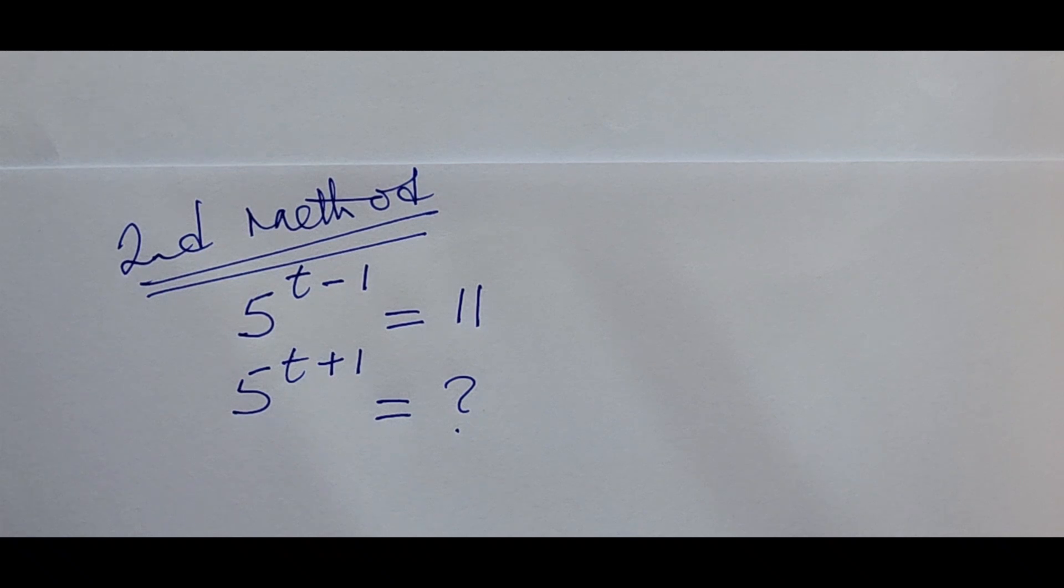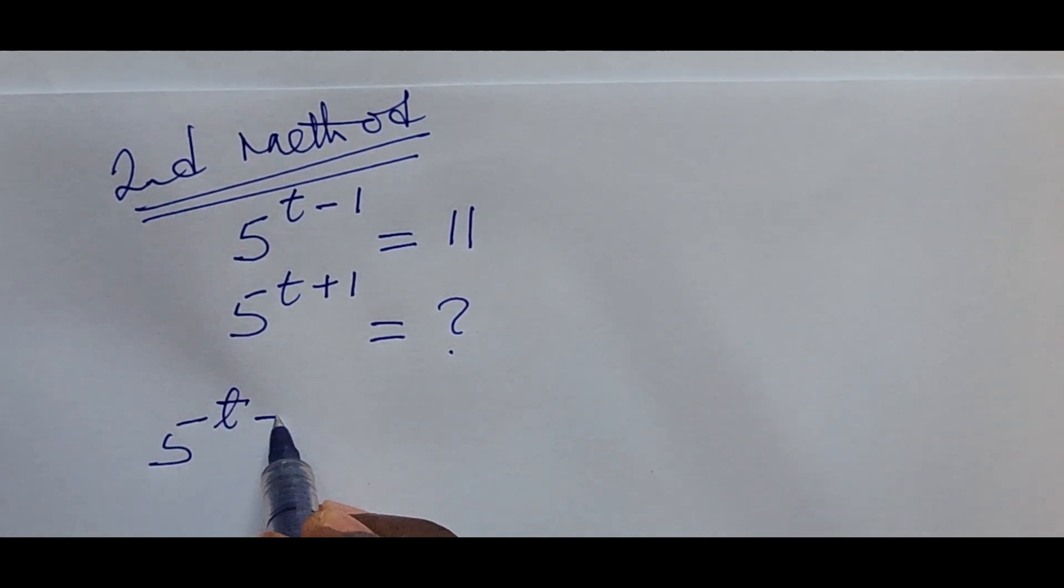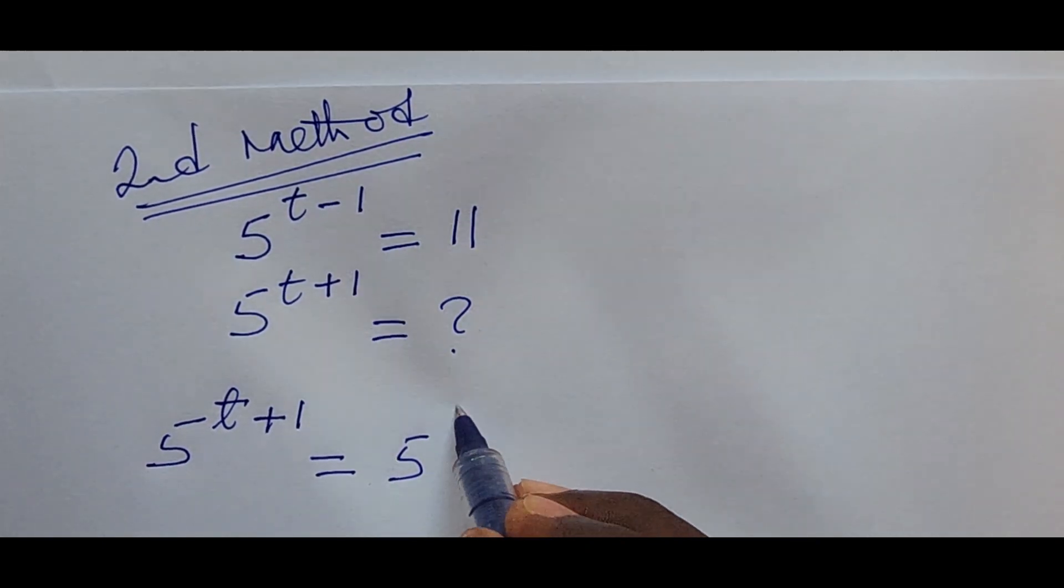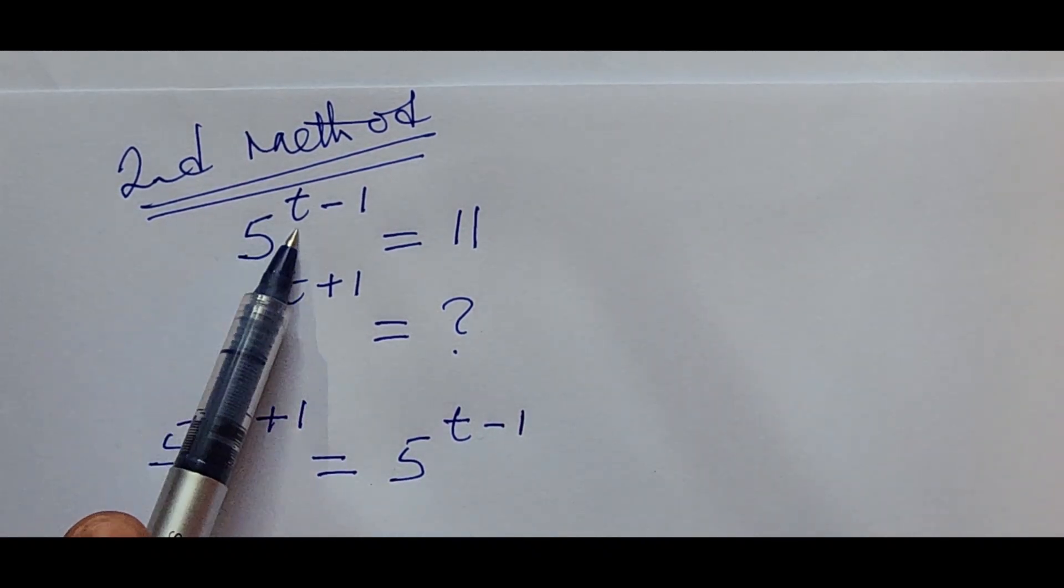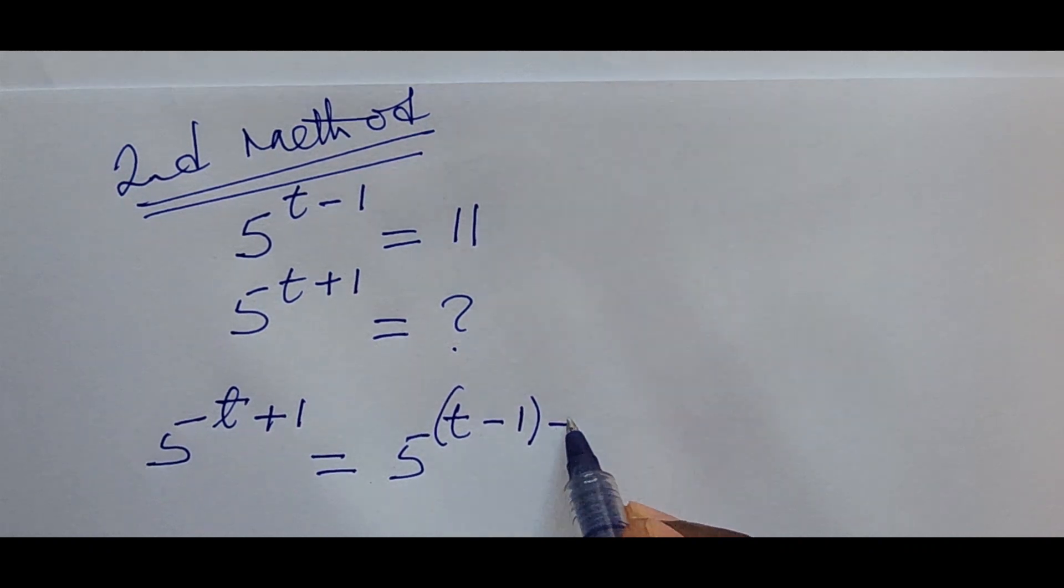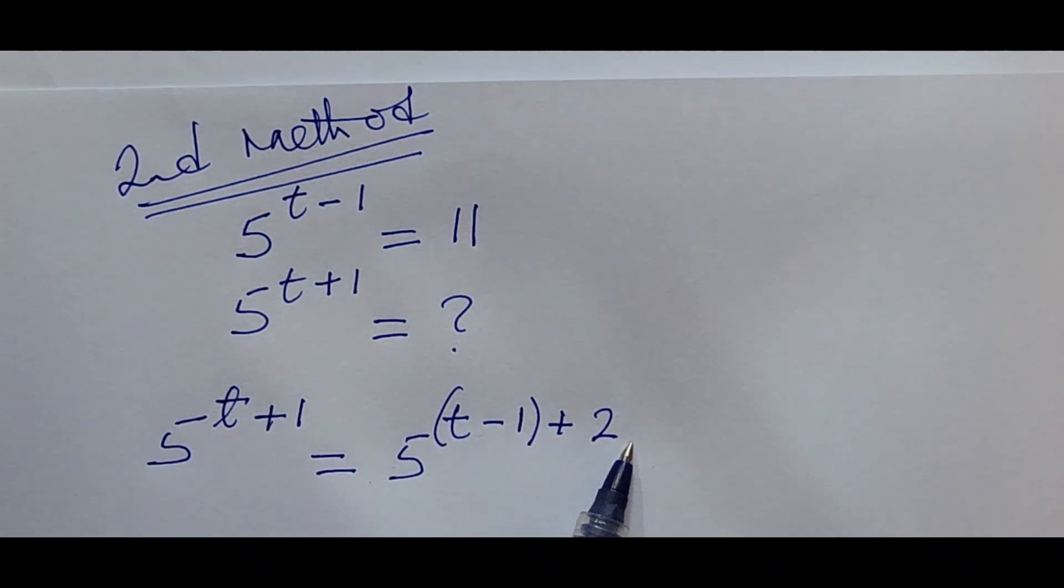Now all we just need to do is to rewrite this second expression to fit into the first expression. So taking our 5, 5 to the power of t minus 1, which is the first expression that gave us 11, then in bracket, plus our 2.